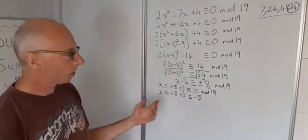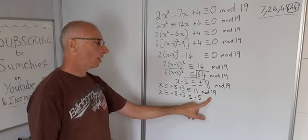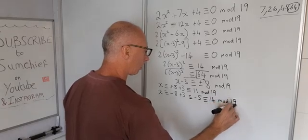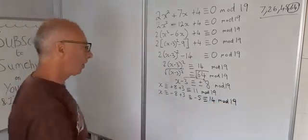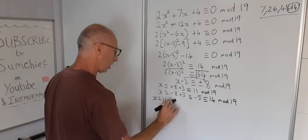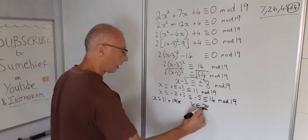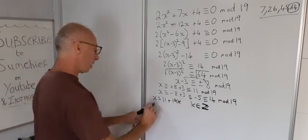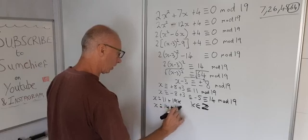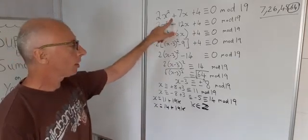We don't really want to put x = -5 as a solution. It is valid, but what we want to do now is make that an integer that's less than 19. So now that will be congruent with 14 mod 19. So what we say now is that x = 11 + 19k where k is an integer, and we can also say that x = 14 + 19k where k is also an integer. And that will be our solution to this quadratic congruence.